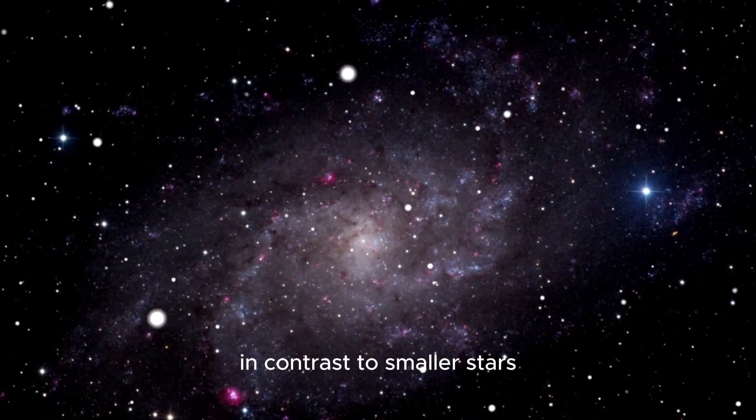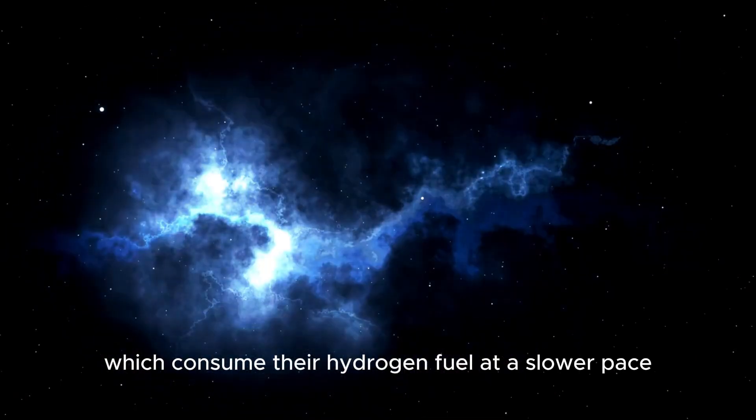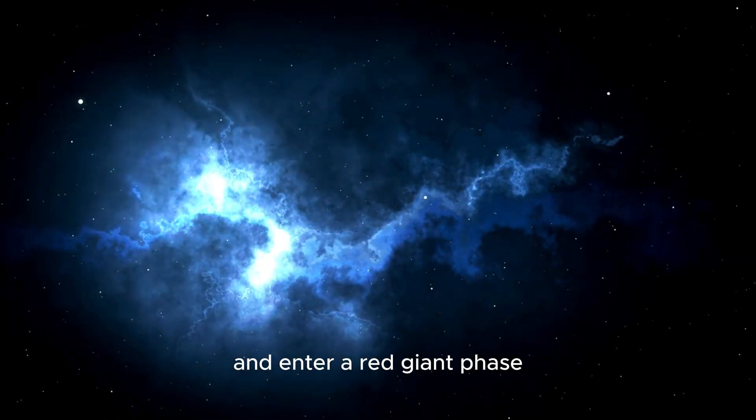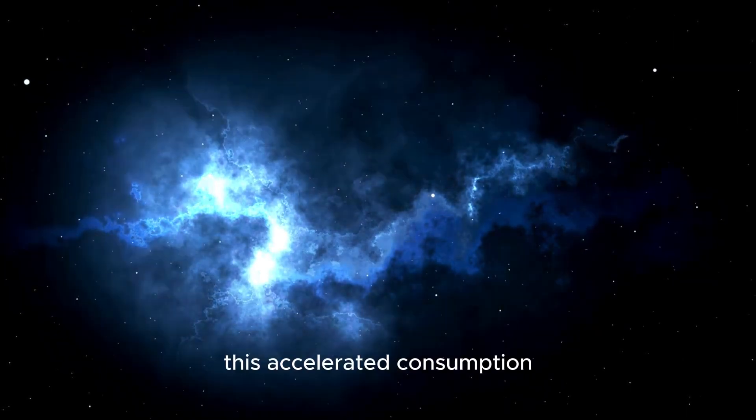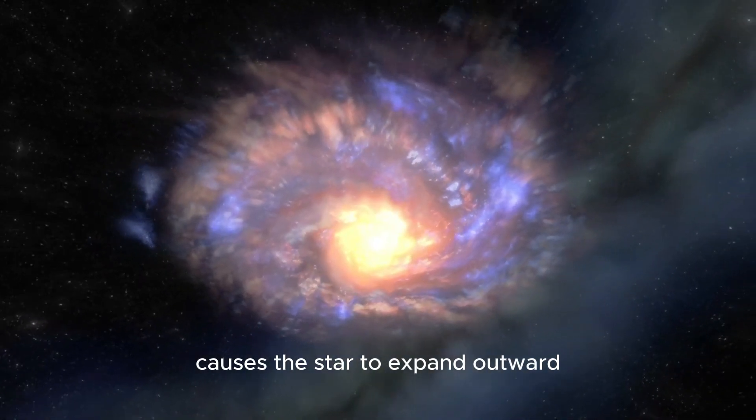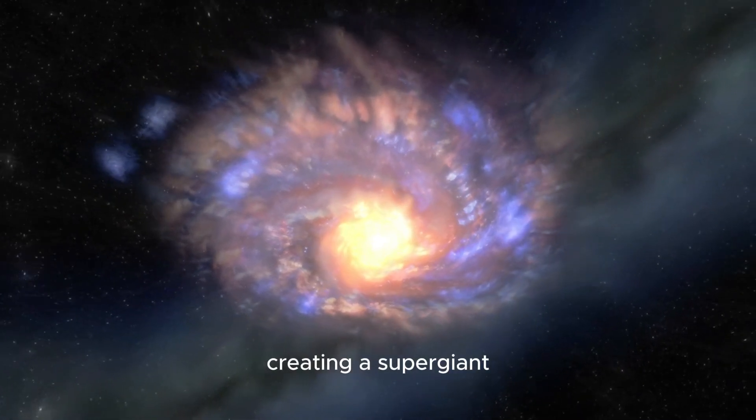In contrast to smaller stars, which consume their hydrogen fuel at a slower pace and enter a red giant phase, massive stars like Betelgeuse burn their nuclear fuel much more quickly. This accelerated consumption causes the star to expand outward, creating a supergiant.